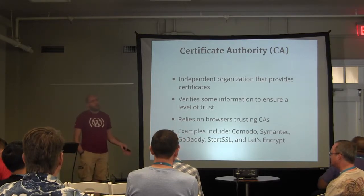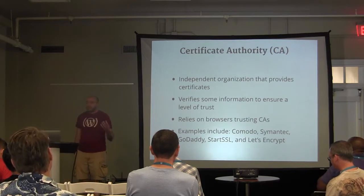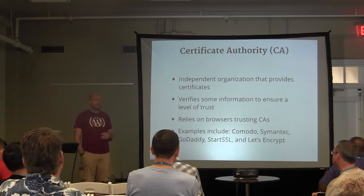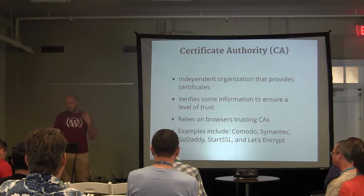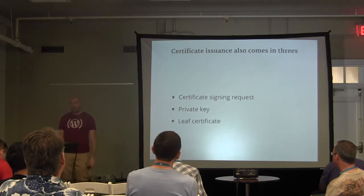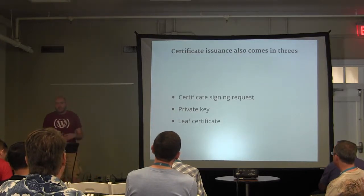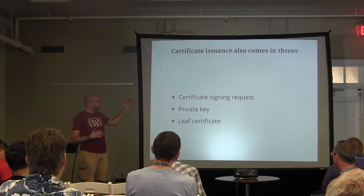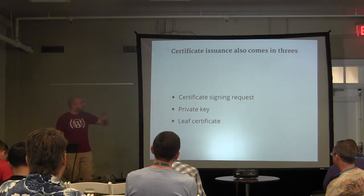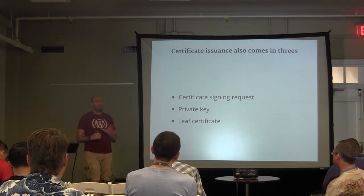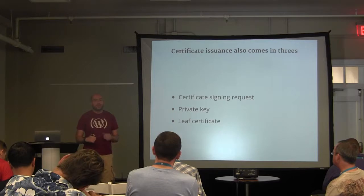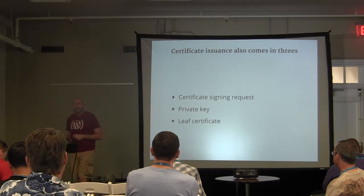With a certificate authority, in order to get the certificate, there's what's called a Certificate Signing Request. This gets us into the three pieces of actually receiving a certificate — the certificate issuance. Traditionally, when you were getting ready to request a certificate, you would generate a CSR and a private key, then go to the certificate authority and go through their process, and they give you back the leaf certificate.